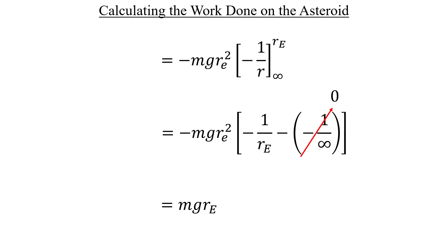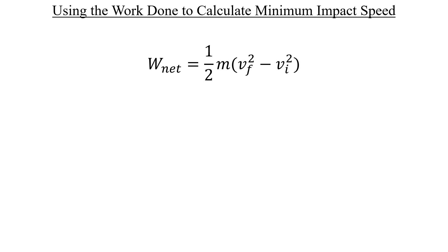Now that we know the net work done by the Earth's gravitational force on the asteroid, let's try and use the work energy theorem to get the impact speed. When the asteroid is a great distance away, it will have an initial speed of zero. So that means that the net work expression that we just solved for, mg times the radius of the Earth, that'll be equal to ½ times m times v final squared.